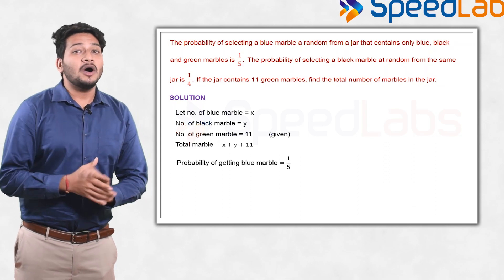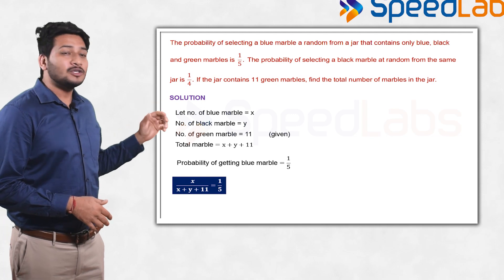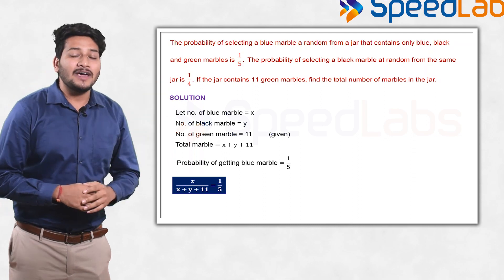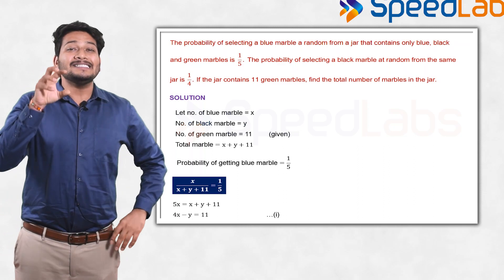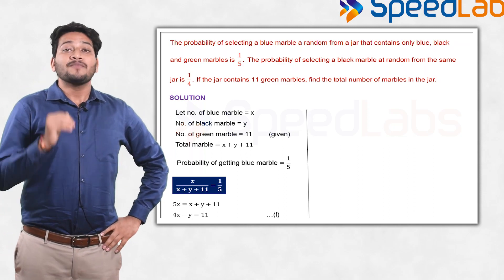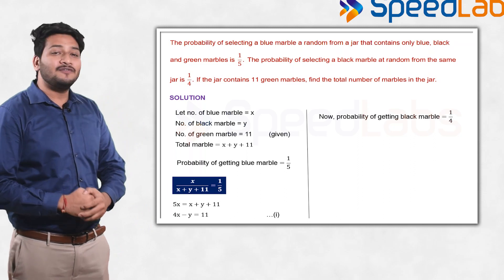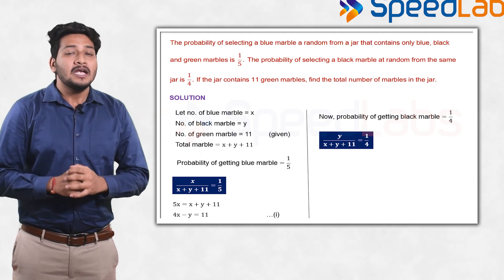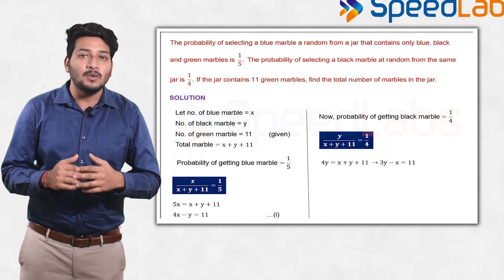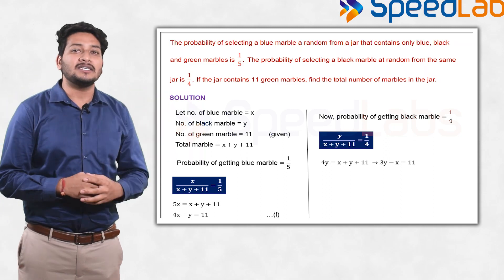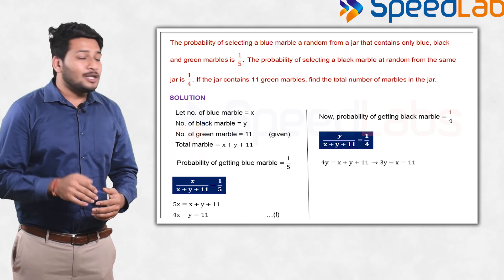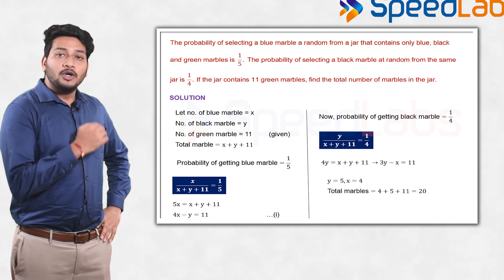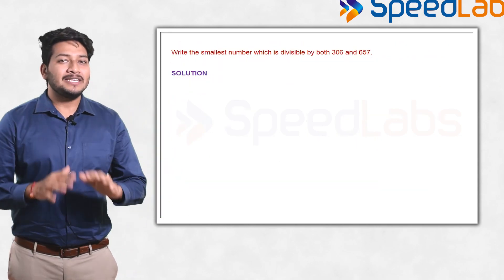What is the probability of getting blue balls? It will be x upon x plus y plus 11, because total number of balls are x plus y plus 11. So it is given to you 1 upon 5, so you will get one equation in x and y from this. The same thing you are supposed to do for black balls. What will be the probability of getting a black ball? It will be y upon x plus y plus 11, which is equal to 1 upon 4. So you will have one more relationship between x and y. Just solve these two equations to calculate x and y. If you calculate and add x, y, and 11, the total number of balls come out to be 20.